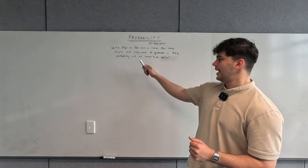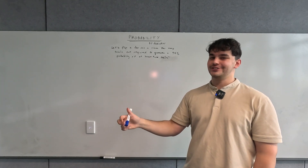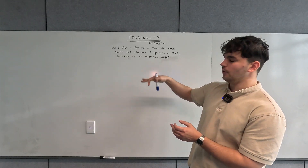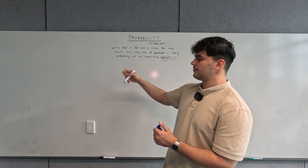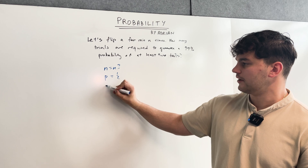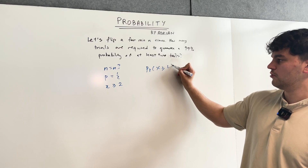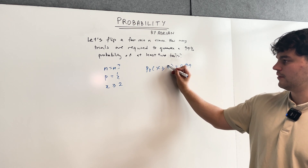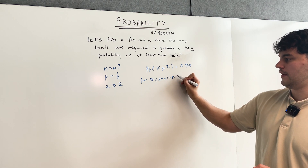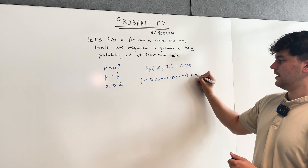Now let's do an extension of this question where it's exactly the same except we want at least two tails instead of at least one. Because of that slight change, it causes a slightly different working out to be used — we can't use the previous approach. Again, n is equal to n (unknown), probability of success is one half, and x is greater or equal to two. So the probability that x is greater or equal to two equals 0.99, and the complement is one minus P(X=0) minus P(X=1).